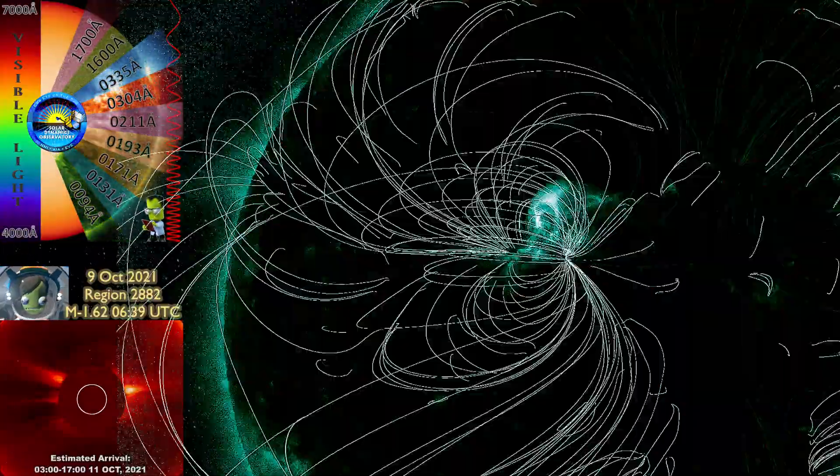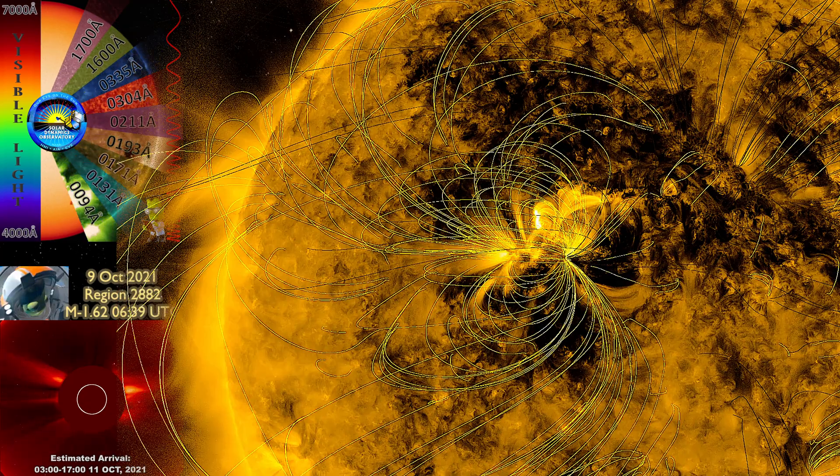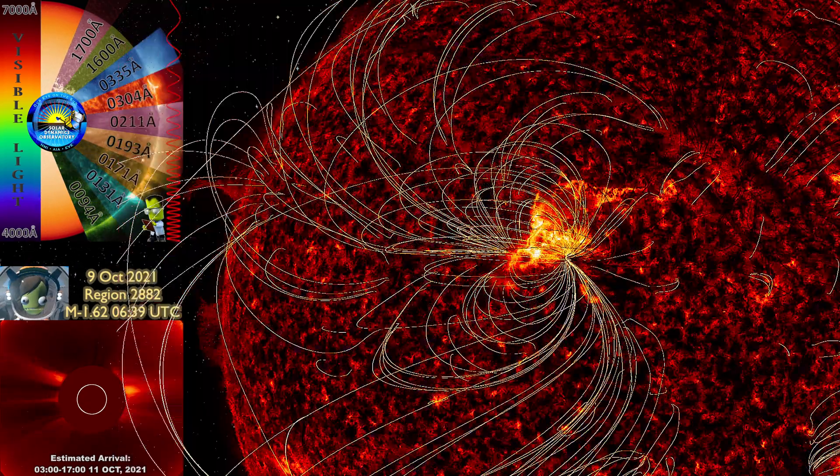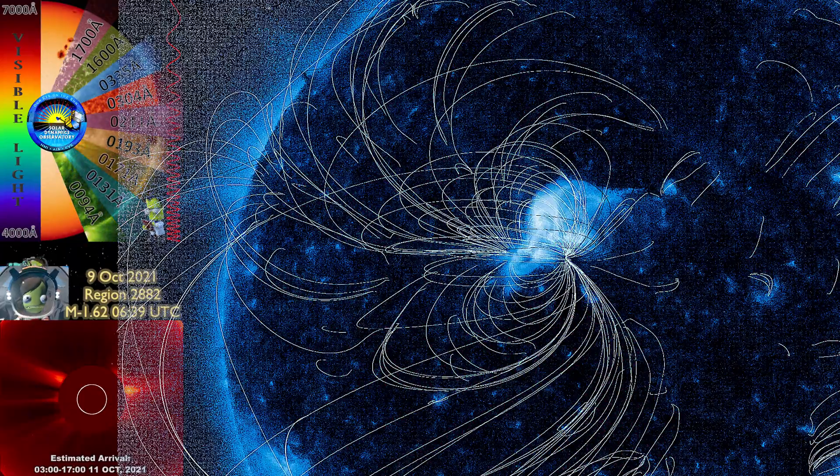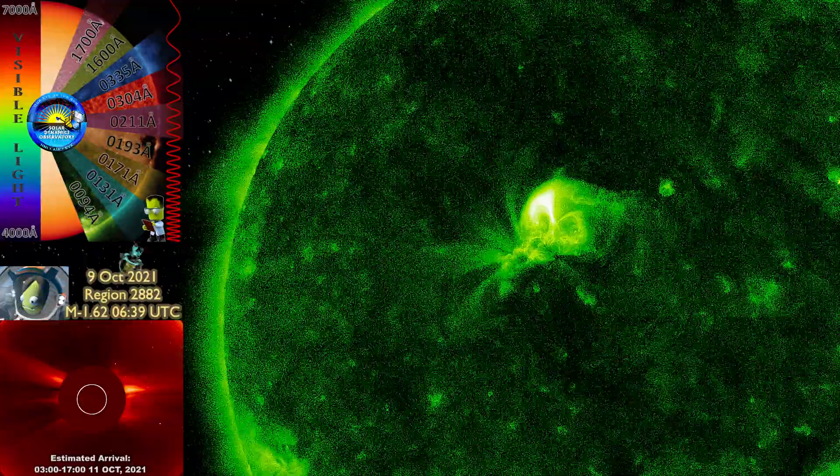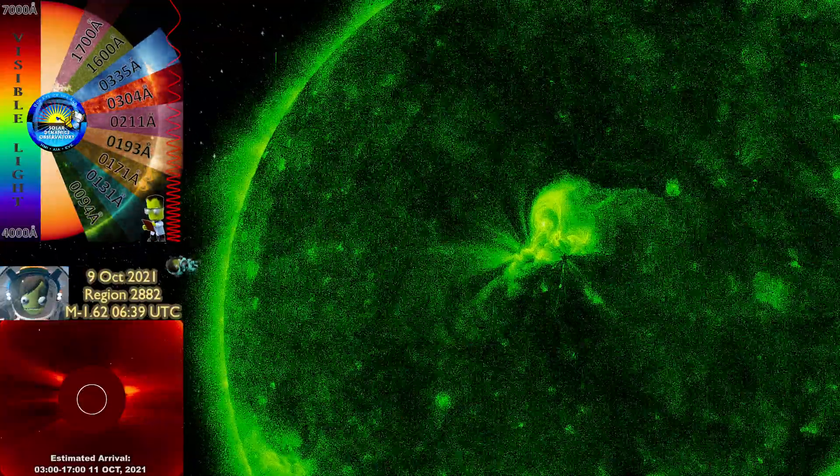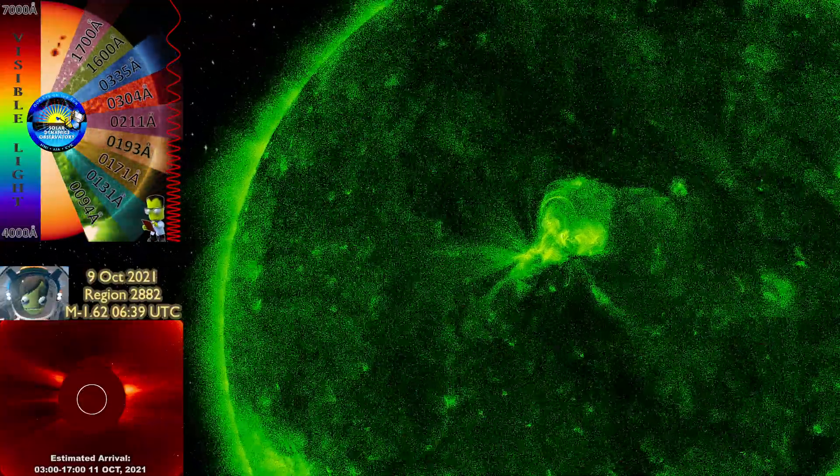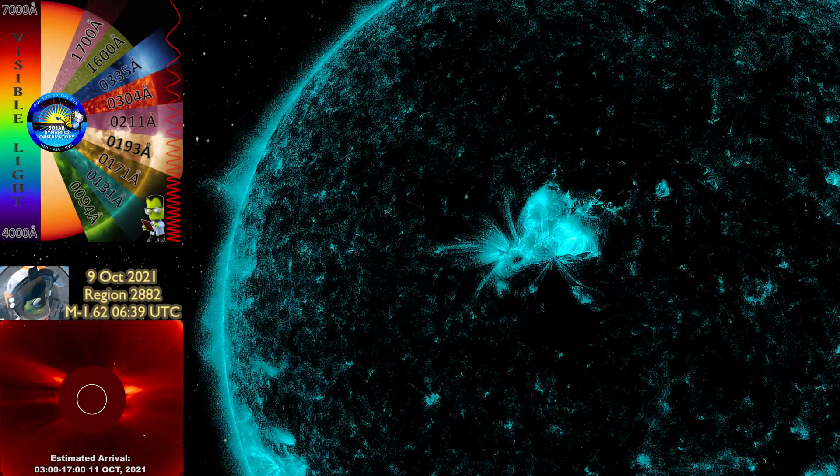Increased drag on low Earth orbit satellites is possible. High frequency radio propagation can fade at higher latitudes, and the aurora will be more visible, potentially as low as New York, Wisconsin, and Washington state, for instance.